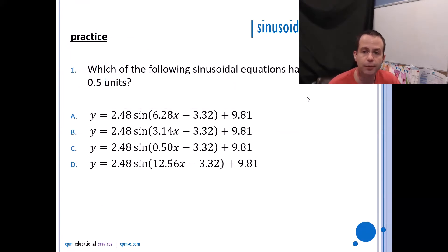So which of the following sinusoidal equations has a period of 0.5 units? So again, on your formula sheet you have access to the fact that your period is 2π/b. Knowing that your period is 2π/b also tells you that b is 2π over your period. Now if I want a period of 0.5, I'm going to take 2π divided by these b values here and see which one is going to give me 0.5. So I can go 2π divided by 6.28. If I do that, I get 1. So that has a period of 1 unit.